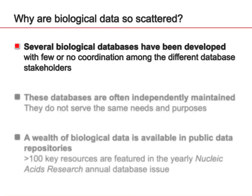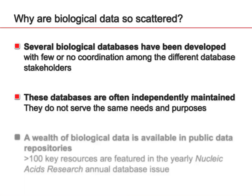But to be able to answer these complex questions, we have to combine these data, and first solve some problems. When thinking about biological data on the web, it is really scattered. Several biological databases have been developed with little or no coordination among database stakeholders. One of the main issues is that these databases are often independently maintained, don't serve the same needs, and are domain-specific — for example, gene expression, ontology, or protein-centric databases. Some already do partial data integration for a specific domain such as gene expression, but it's limited.